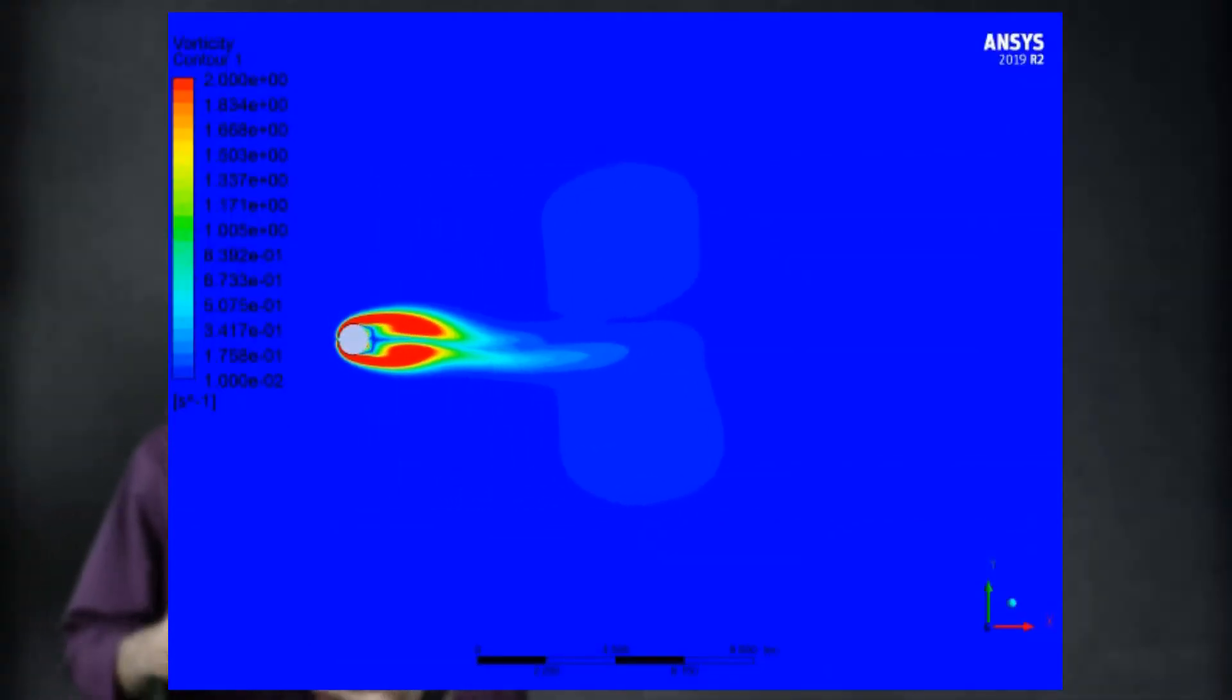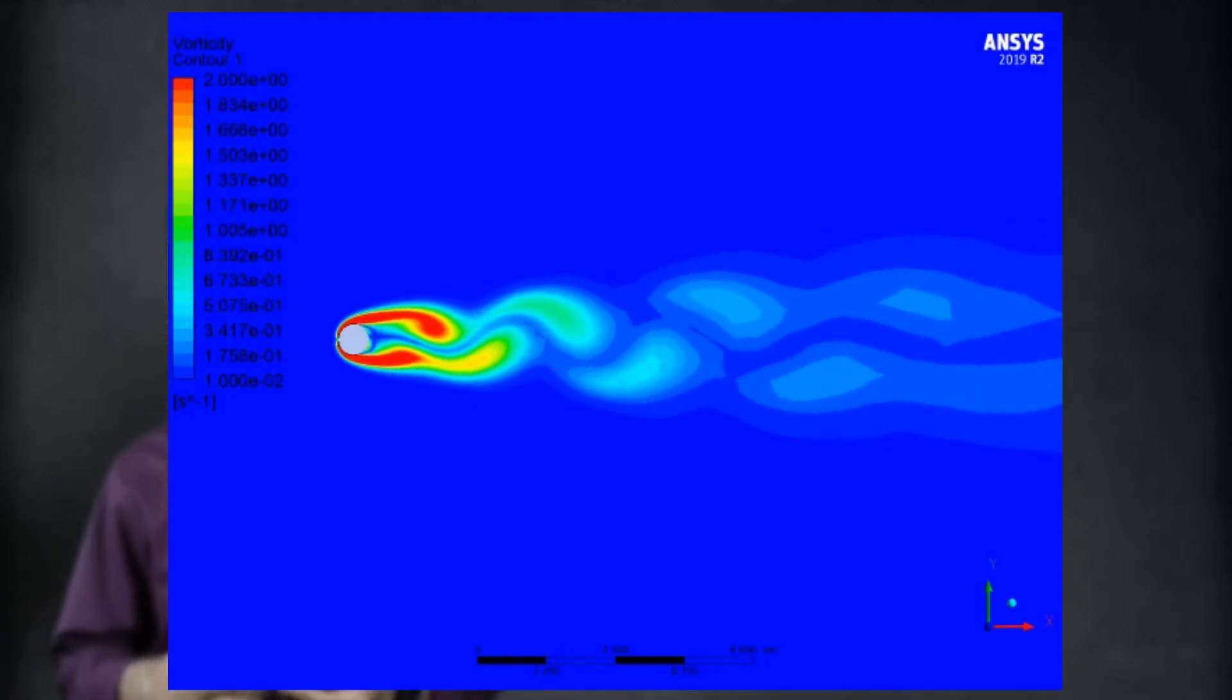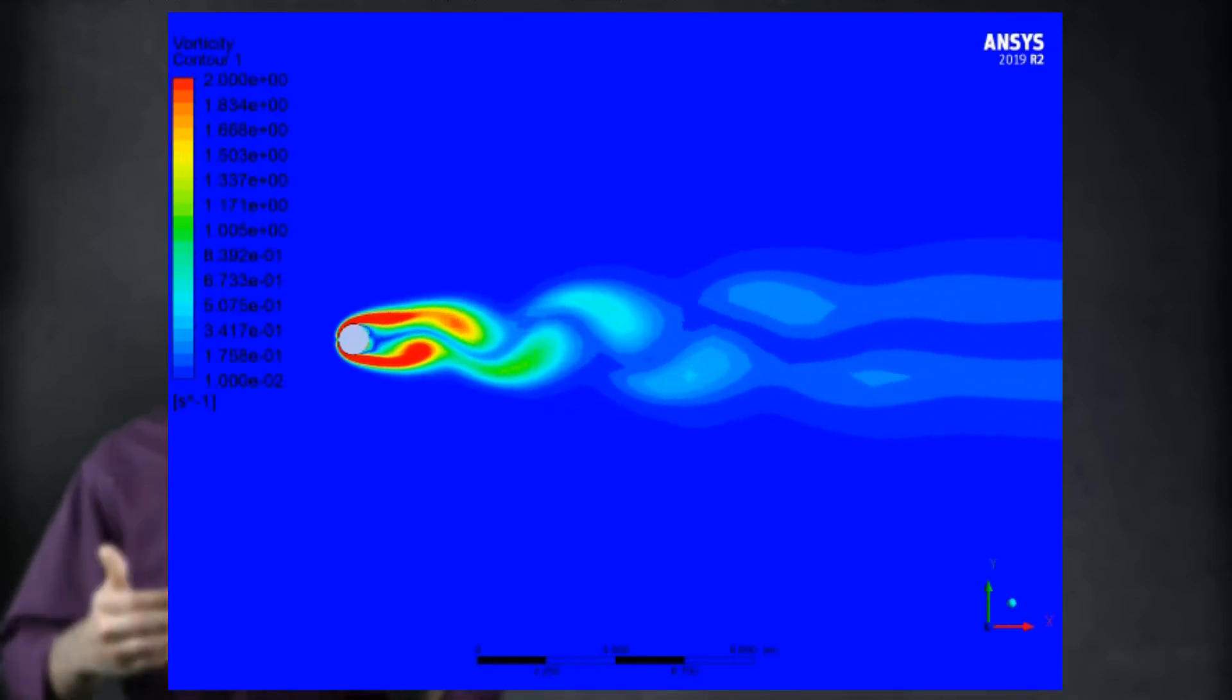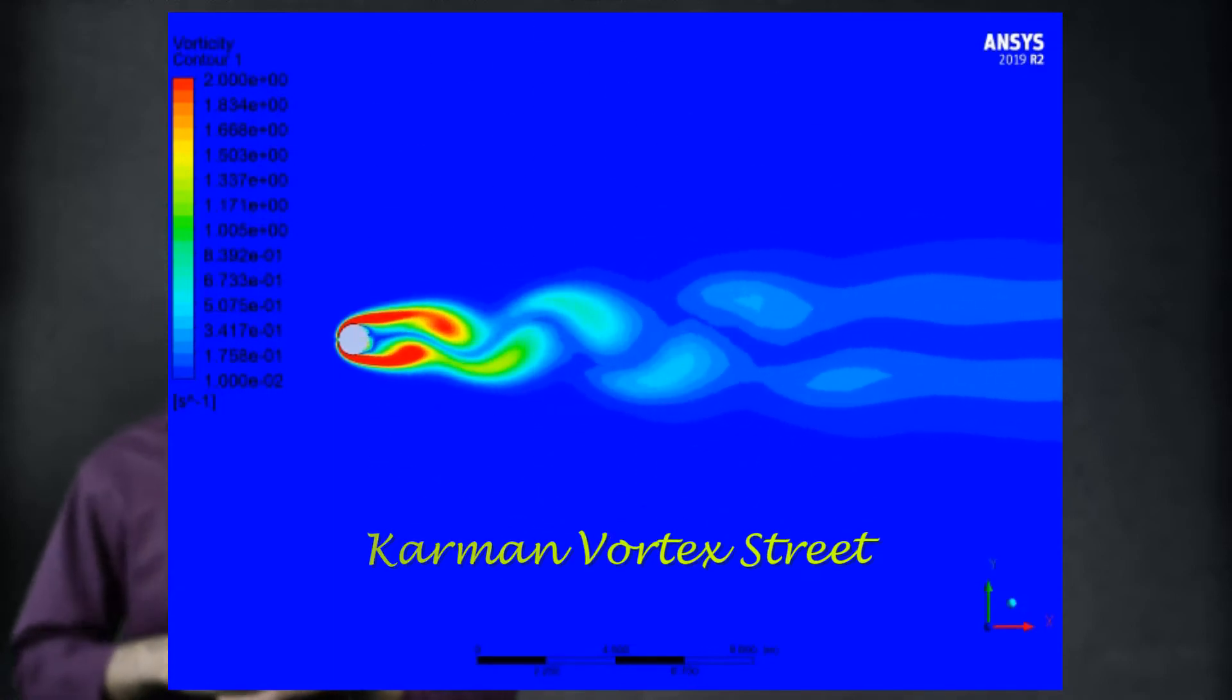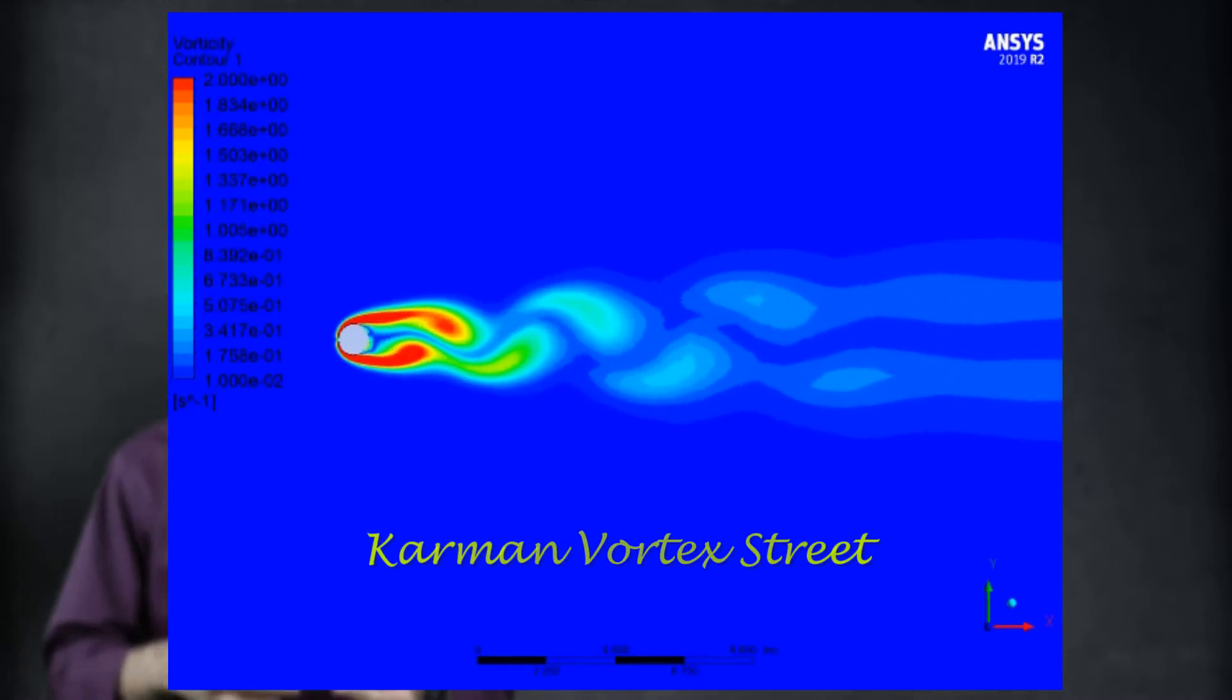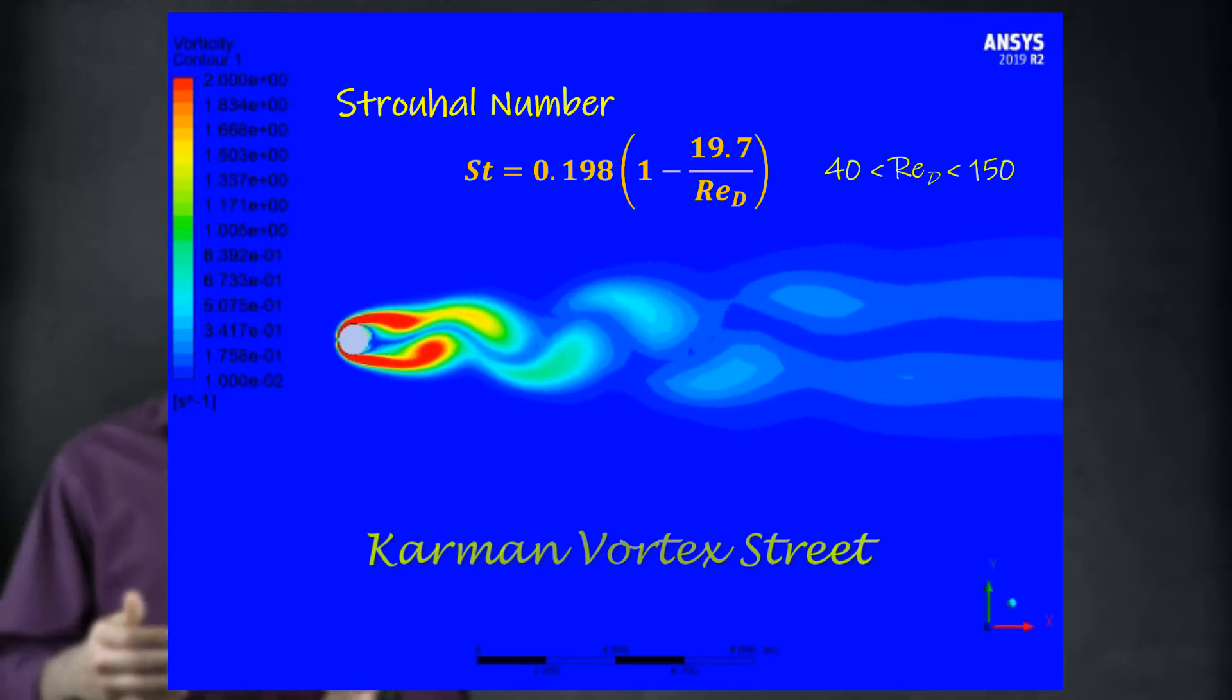At a certain range of Reynolds number, periodic pairs of vortices are generated from the top and bottom surfaces of the cylinder. This stable, periodically repeating trail of vortices is referred to as the Karman Vortex Street, named after the famous physicist Theodore von Karman. The frequency of these vortices is expressed using a dimensionless number called the Strohal number.